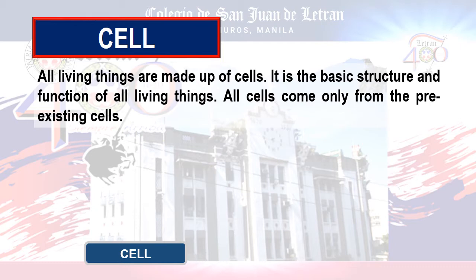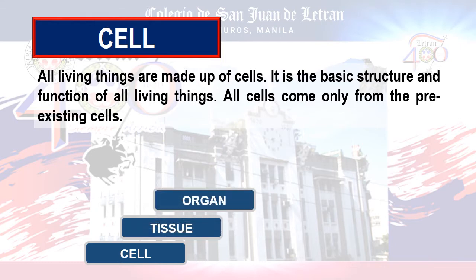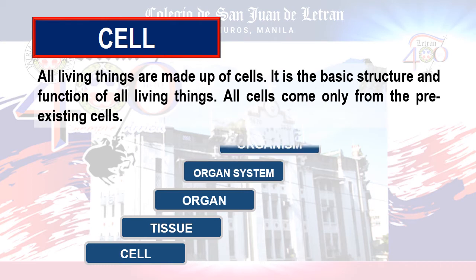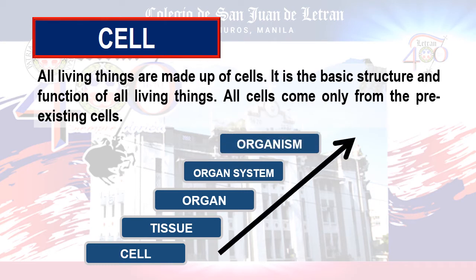We have five levels under biological organization: from cell to tissue, from tissue to organ, from organ to organ system, and from organ system to organism.